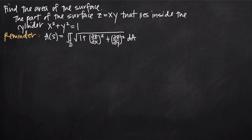In this video, we're going to be talking about how to find the area of a surface. In this particular problem, we've been asked to find the area of the part of the surface z equals xy that lies inside the cylinder with equation x squared plus y squared equals 1.